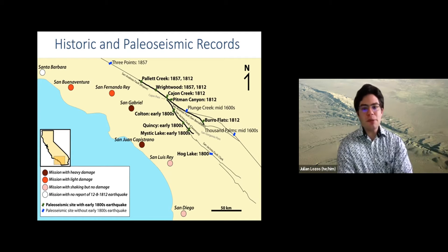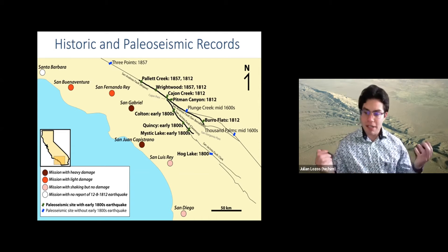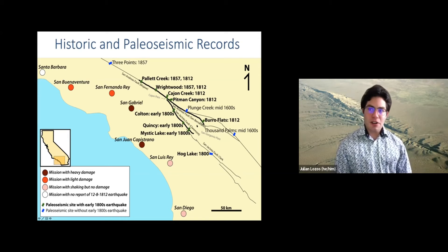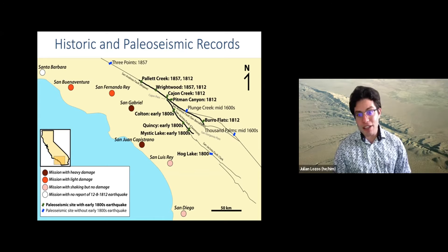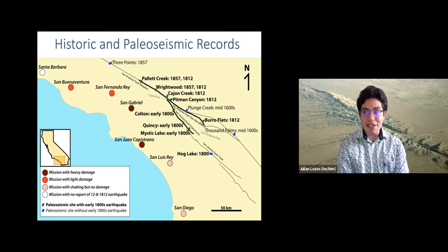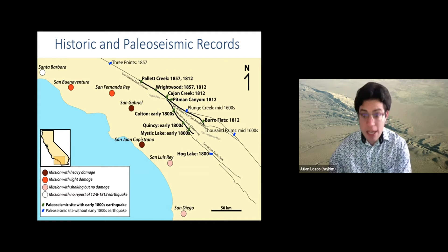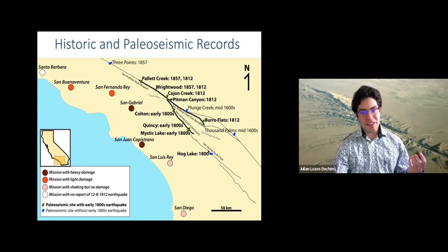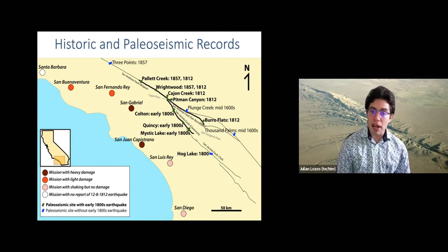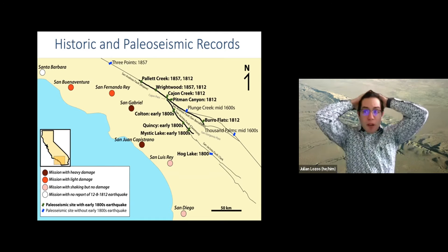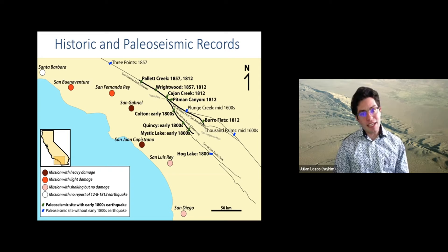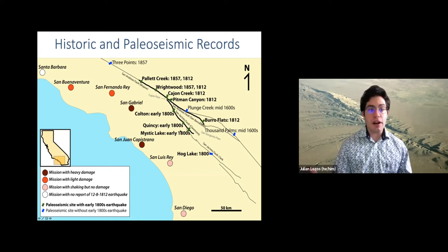That gets at the question: was the 1800 earthquake a San Jacinto that jumped the four kilometer step-over, or was 1812 a multi-fault rupture? I admit I came into this with a little bit of bias, because my dissertation research was on that step-over in the San Jacinto — not in a historic earthquake sense, but just in a general sense of what would it take to get an earthquake to jump that four kilometer step-over. As it turns out, I didn't get any earthquakes in my dissertation work that jumped that step-over and also had a realistic amount of slip — the ones that did jump it had like 10 meters of slip, which definitely doesn't bear out with observations.